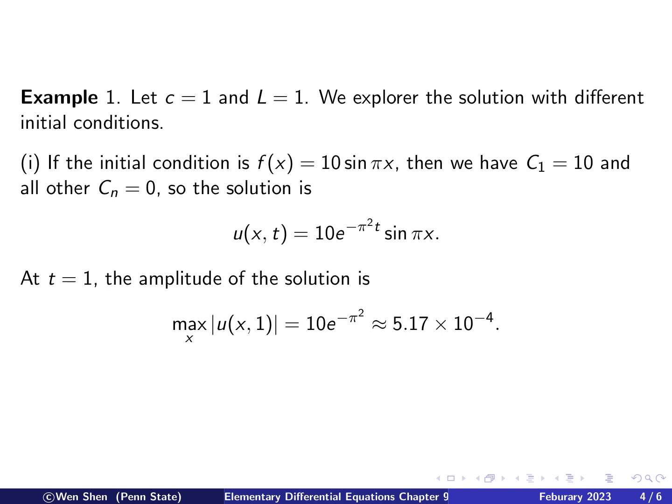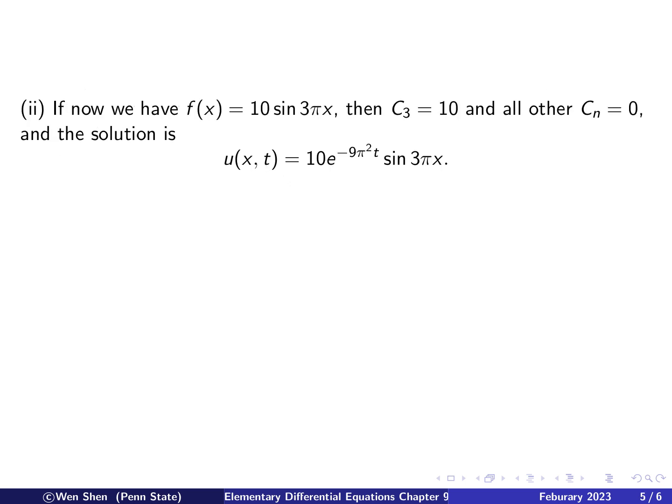Pick a later time, let's say t equals 1, and we can calculate the amplitude of the solution, which is just this number here, when t is 1. So it will be 10 times e to the negative pi square, and then you can hit your calculator or whatever computational tool you have, and you find out that's about 5 times 10 to the negative 4. So initially the amplitude is 10. After one unit of time, it shrinks down to the amplitude to the magnitude of 10 to the negative 4. So it gets pretty small.